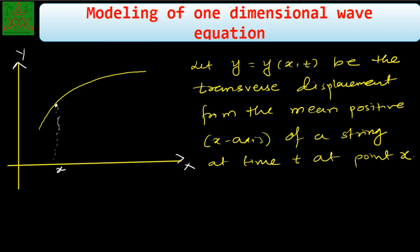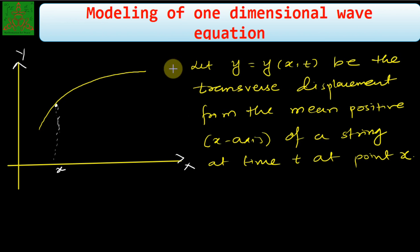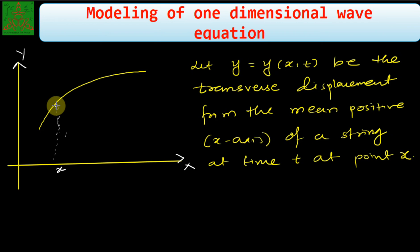Let us consider y = y(x, t) to be the transversal displacement from the mean position — that is, from the x-axis — of a string at time t and at point x. This is the small portion of the string demonstrated here. The point x at time t has position represented as y(x, t).